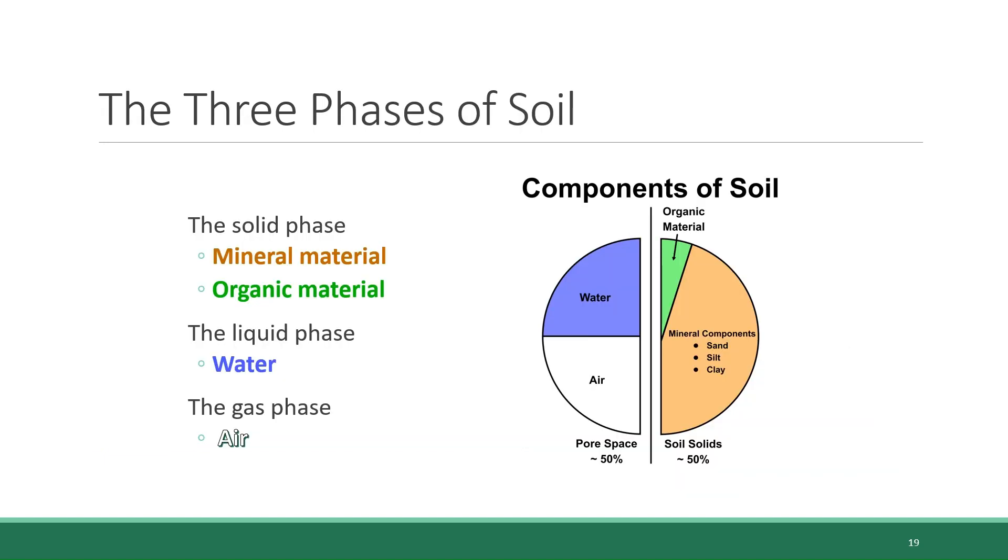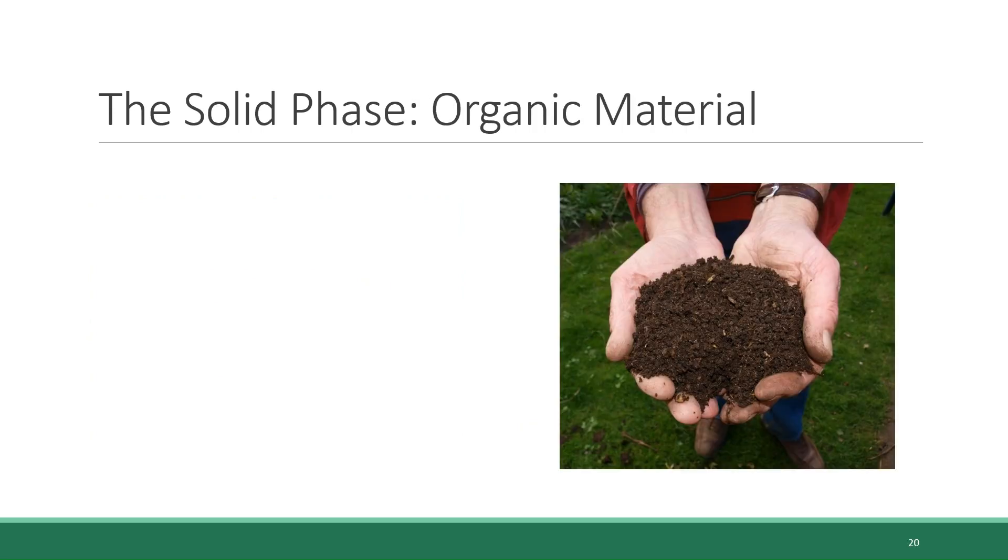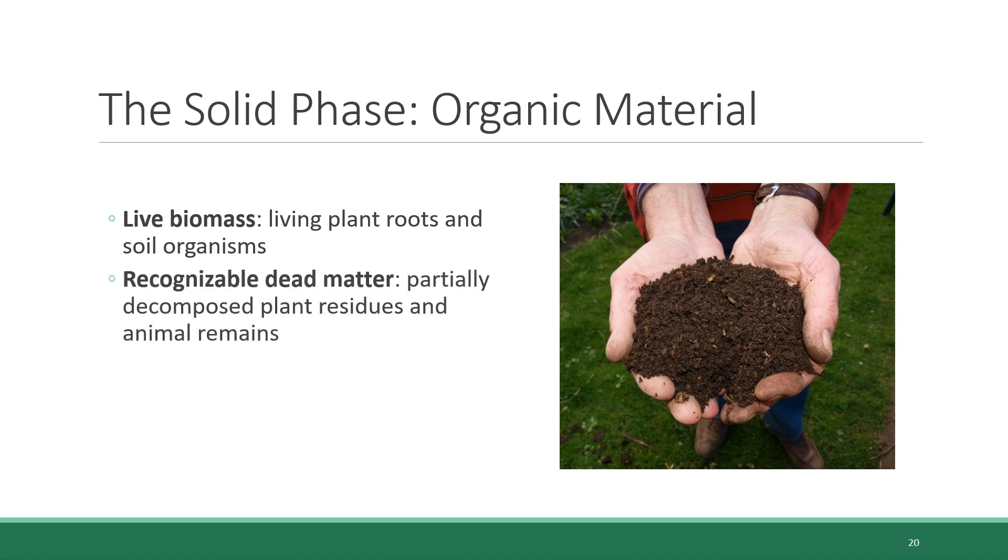Now, remember that the minerals are just one of the two pieces of soil's solid phase. The other part is the organic material. There's three things that are considered part of the organic material of soil. The first is live biomass. In other words, the still living organisms like plant roots and microbes that inhabit the soil. Second is recognizable dead matter, meaning dead plant and animal remains that haven't fully decomposed.